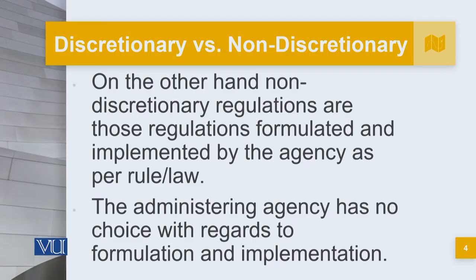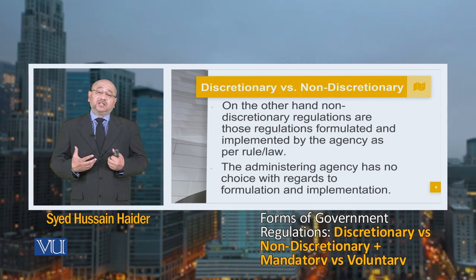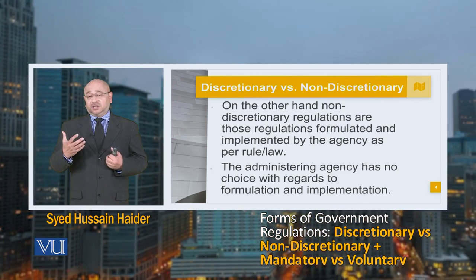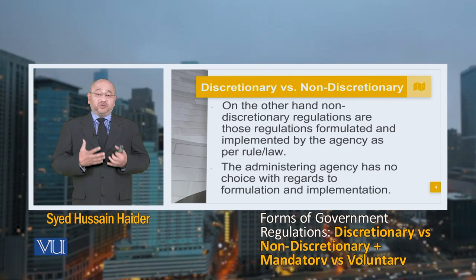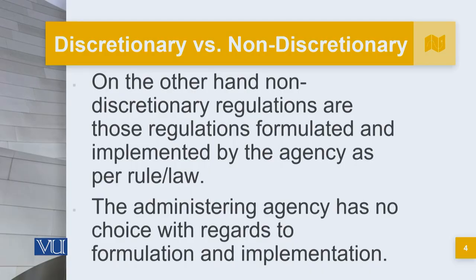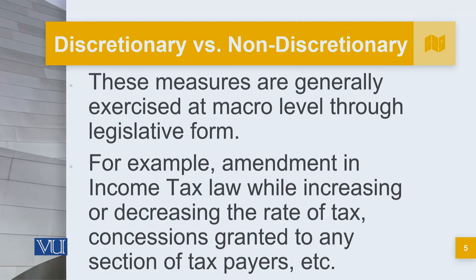On the other hand, non-discretionary regulations are those formulated and implemented by an agency as per rule or as per law. That law is usually promulgated by the federal government — meaning the National Assembly — or by the provincial assemblies. The administrative agency has no choice with regards to their formulation and implementation. These measures are generally exercised at a micro level through legislative reform.